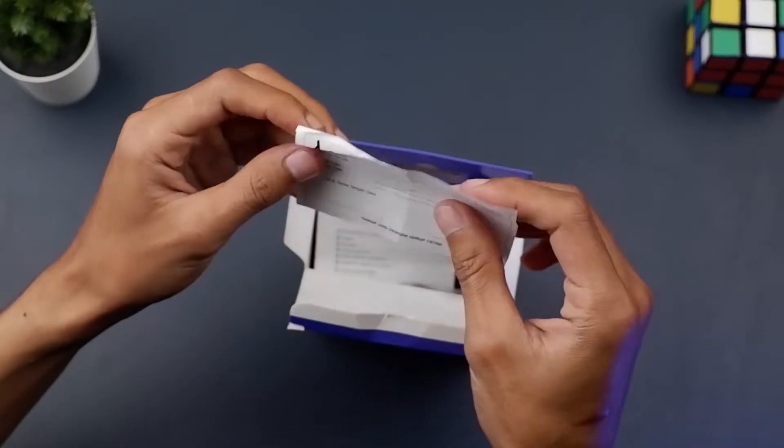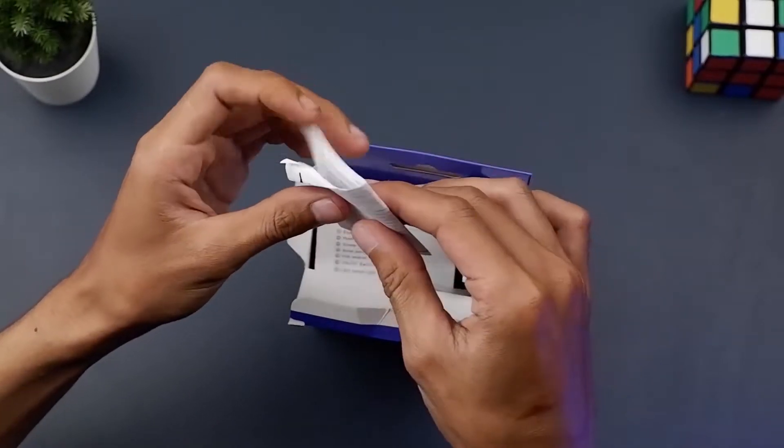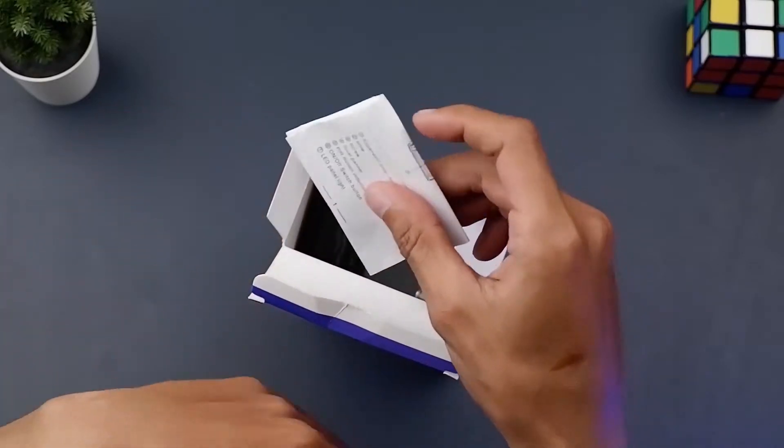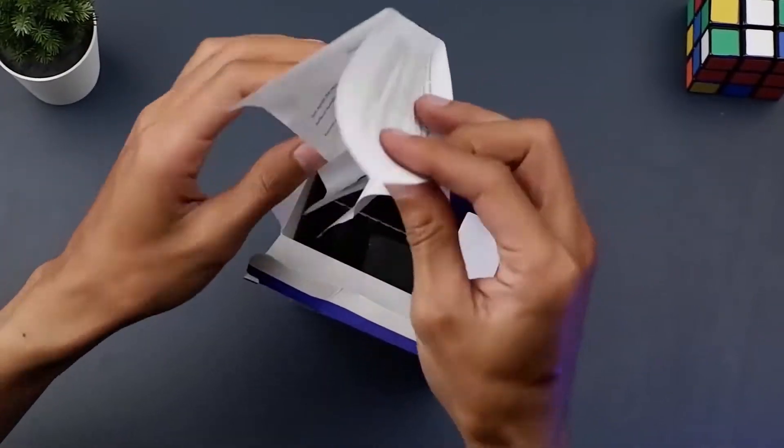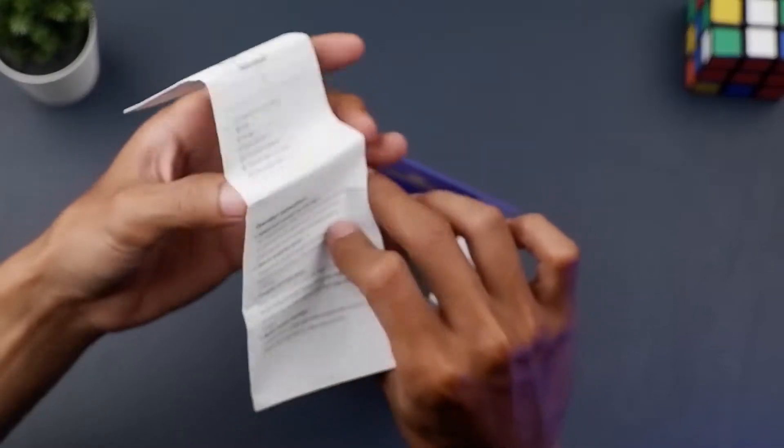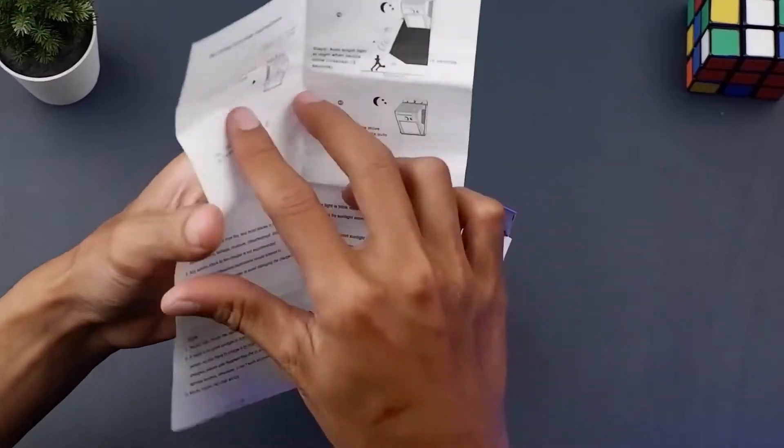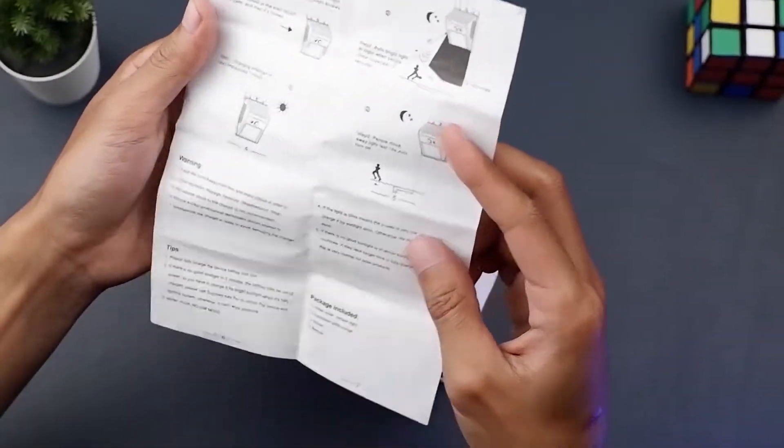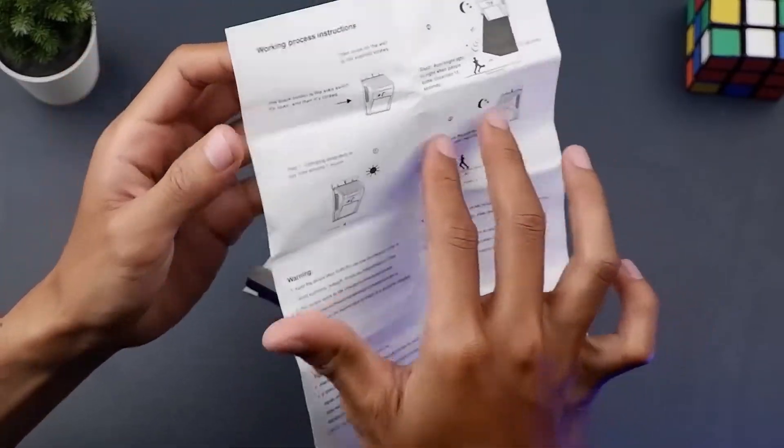Oke, disini kita dapat kartu garansi dari Mitsuyama langsung. Kemudian disini ada user manual atau manual book atau panduan penggunaan ya cara pakenya.